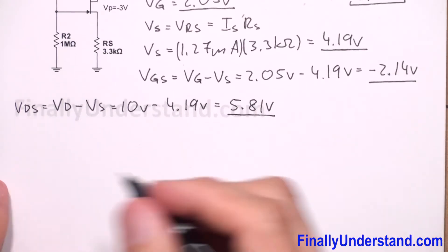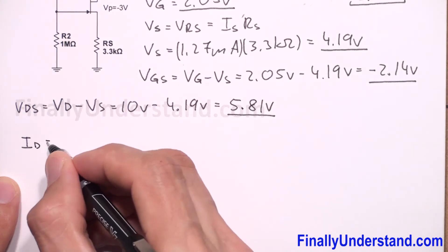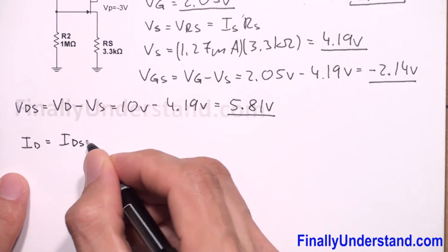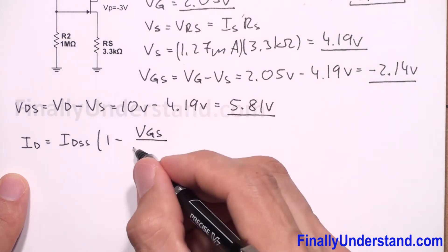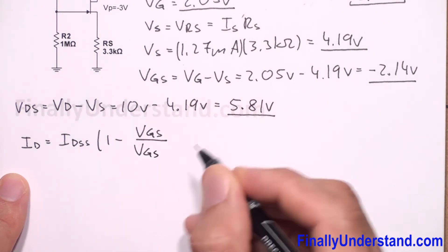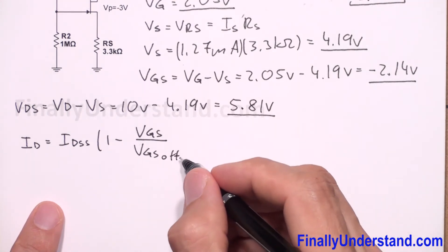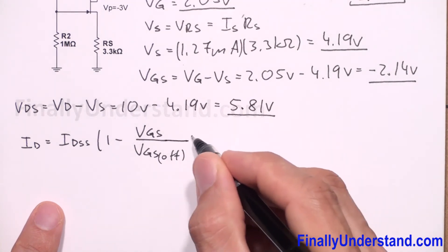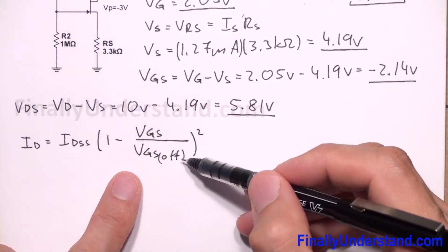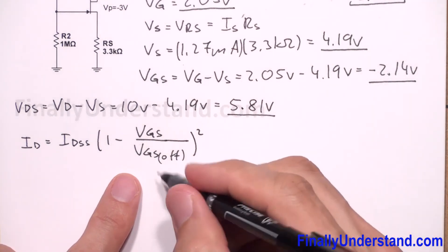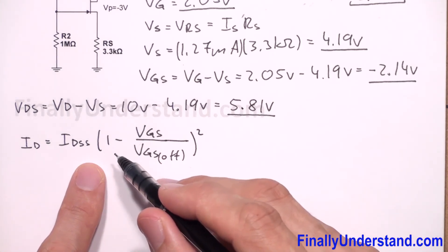Next, we need to find IDSS. You have to remember the formula: ID = IDSS × (1 - VGS/VGS(off))². Note that in some books VGS(off) is written as VP — they refer to the same parameter.